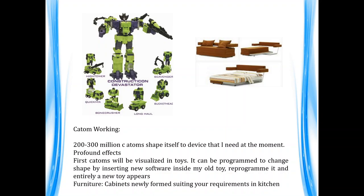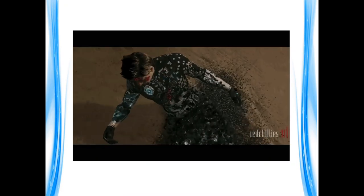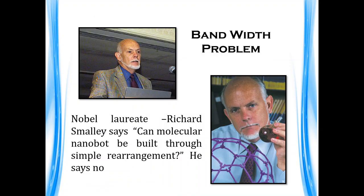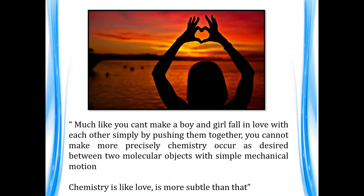Sea atoms — devices made of 200 to 300 million such units — will have profound effects. The first sea atom applications will be visualized in toys: it can be programmed to change shapes by inserting new software inside the toy, reprogramming it so an entirely new toy appears. They can also be used in furniture, where cabinets can be reconfigured to suit kitchen requirements, cutting down waste disposal. However, problems remain due to bandwidth limitations. As novelist Chad Mirkin says: 'You cannot make more precise chemistry occur as desired between two molecular objects with simple mechanical motion' — much like you cannot make a boy and a girl fall in love just by pushing them together. Chemistry, like love, is more subtle than that.